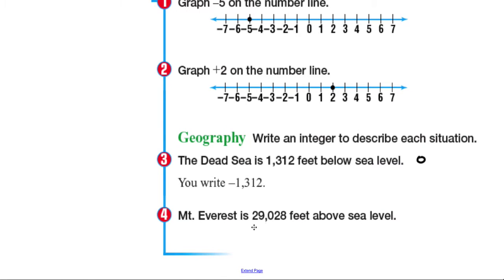Mount Everest is 29,028 feet above sea level. So when you talk about if this is our sea level right here, 0 is our sea level. Anything below sea level is negative. Anything above sea level will be positive. And that's the reason why we have negative 1,312 for the Dead Sea and for Mount Everest, since it's above sea level, we make it a positive 29,028 or simply 29,028 without a positive sign.